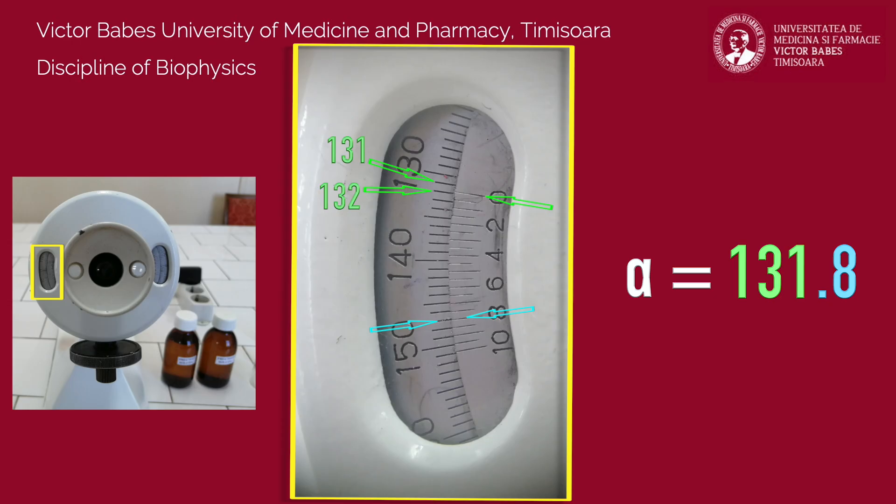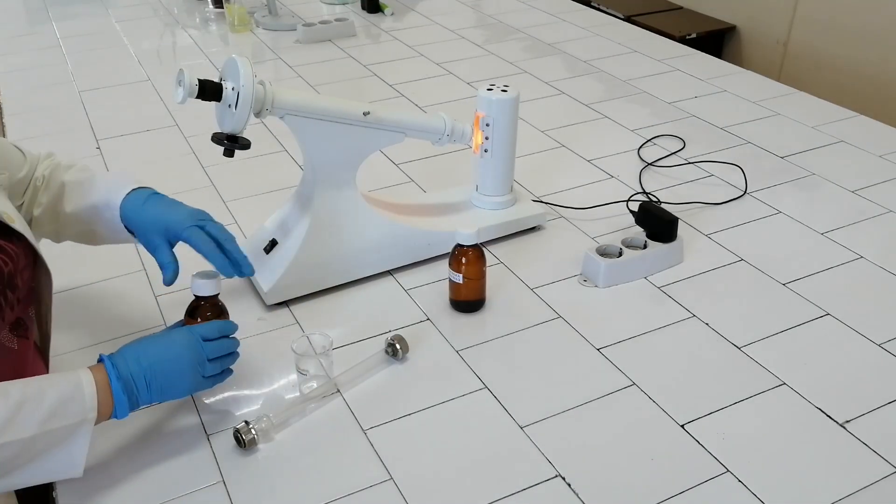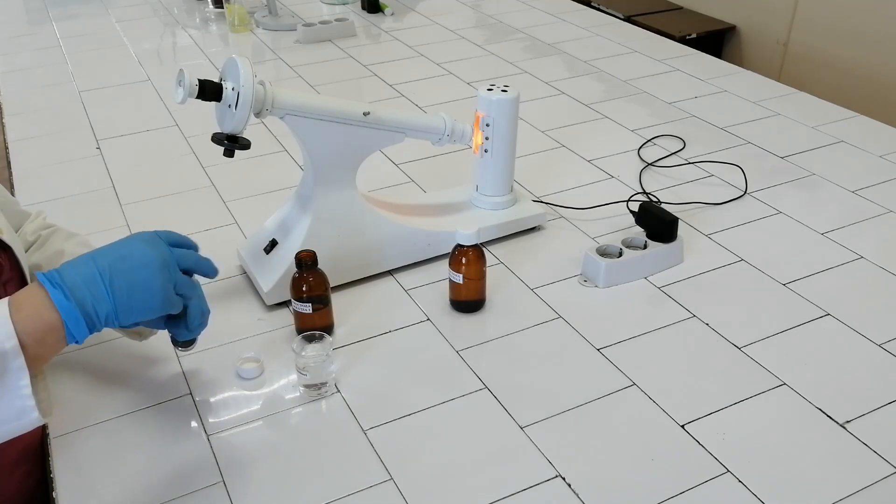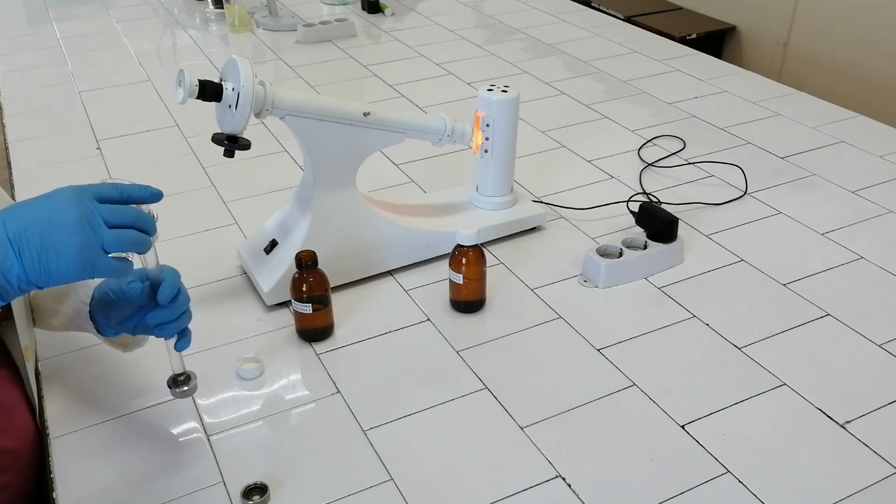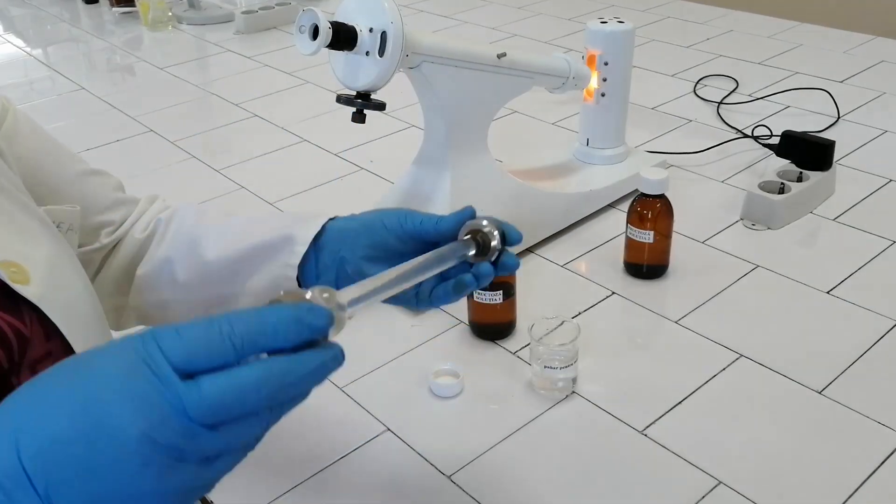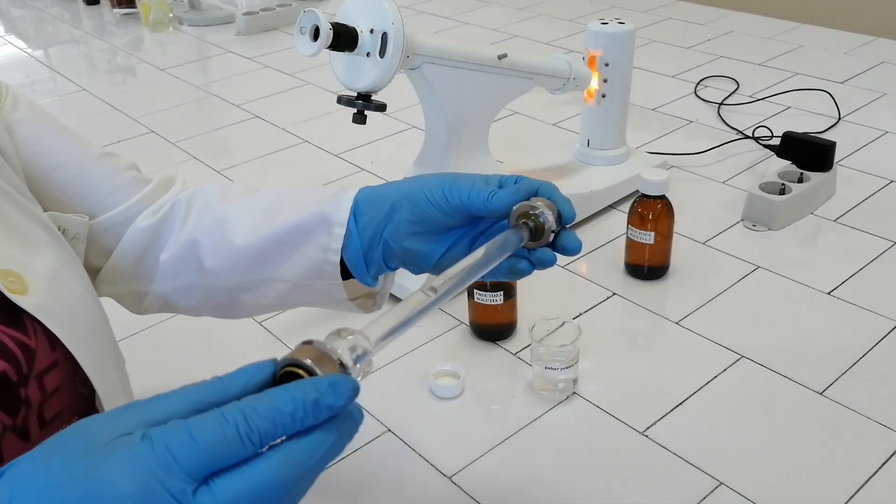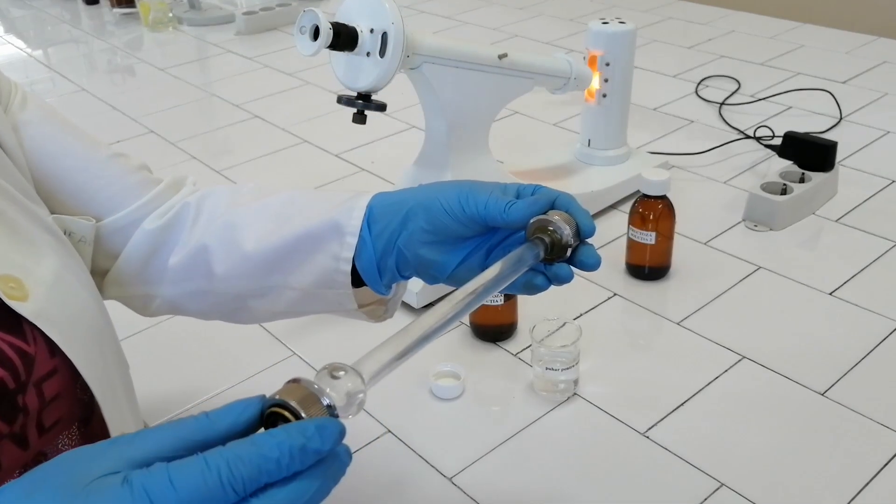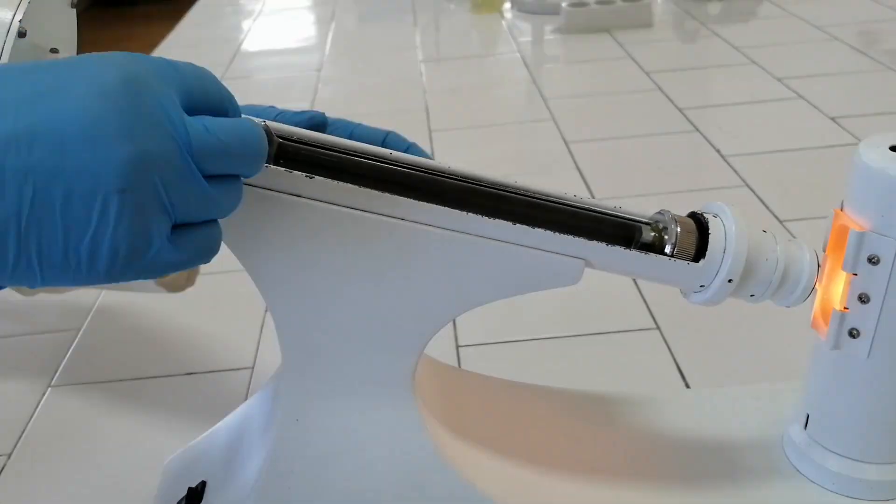Read the rotation angle for the empty tube three times and record the obtained values in the table. Then, consequently fill the tube with the two studied solutions to read their corresponding rotation angles. Fully fill the tube with studied solutions to prevent trapping of air bubbles inside. If a small gas bubble is found, make sure it is trapped on the area of larger diameter of the tube during the measurement.